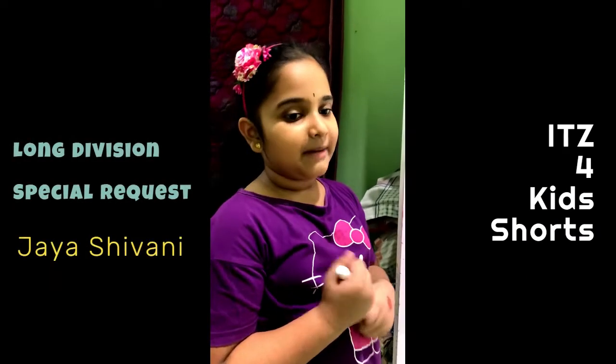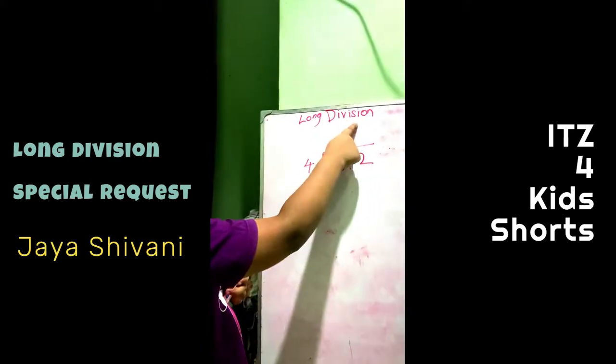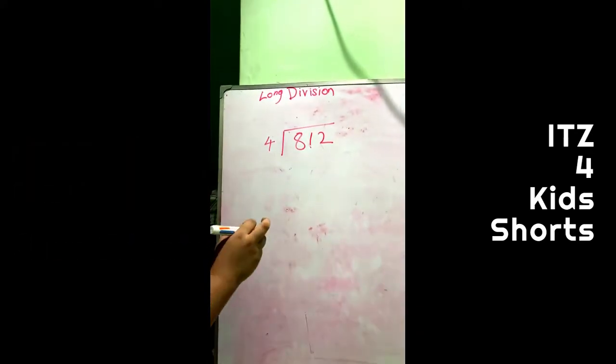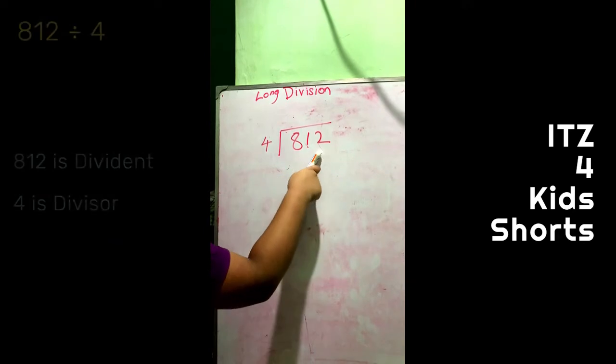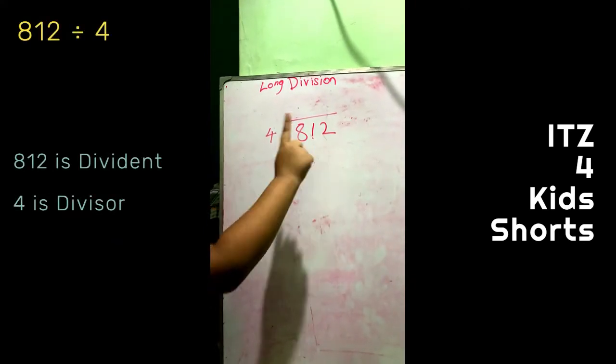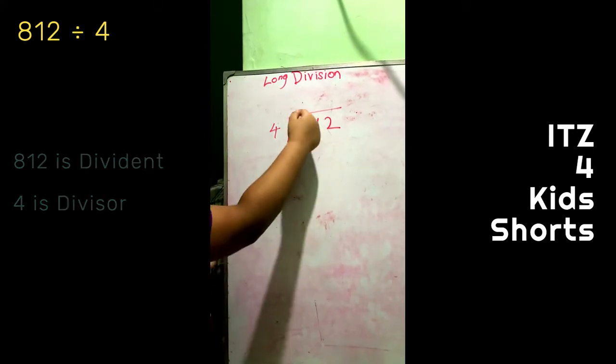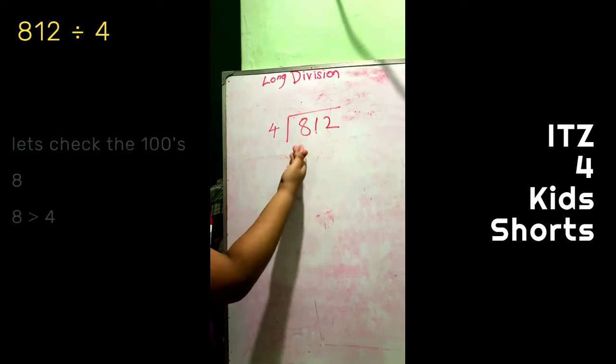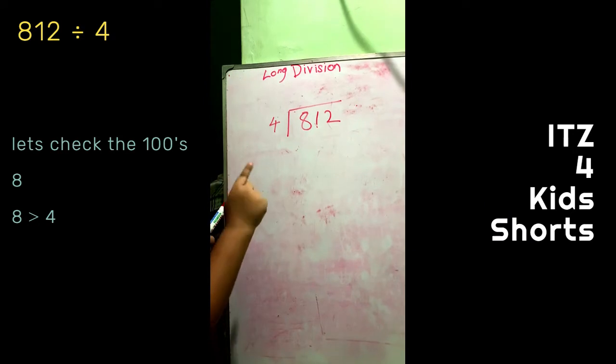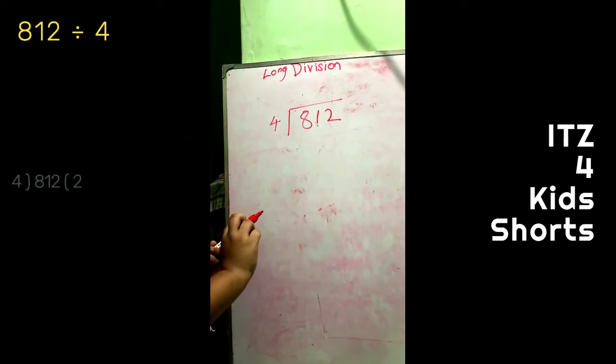Hi guys, welcome back to my channel. Today we are going to learn about long division because my friend Jaya Shivani requested it. Now, 812 divided by 4. This is the dividend, this is the divisor. The first number of the dividend should be greater than or equal to the divisor. This is greater. Now, if you know your tables, 4 times 2 is 8, so...